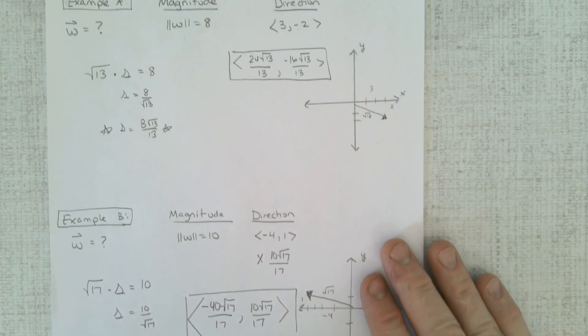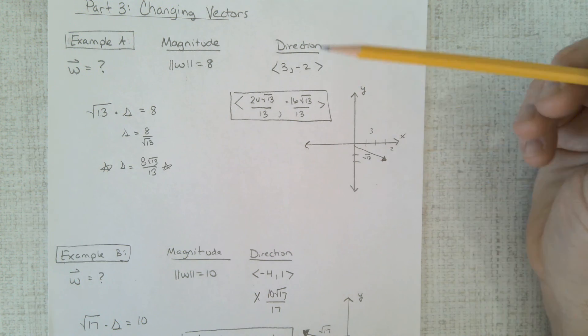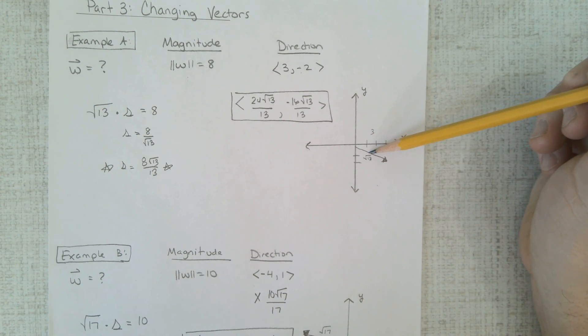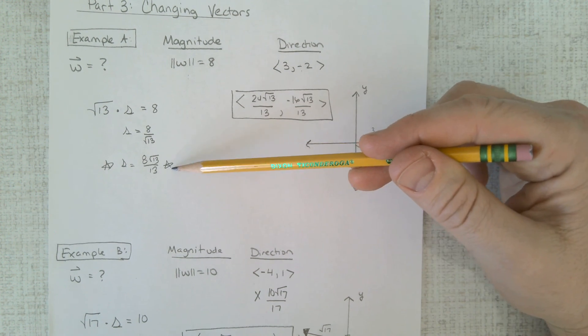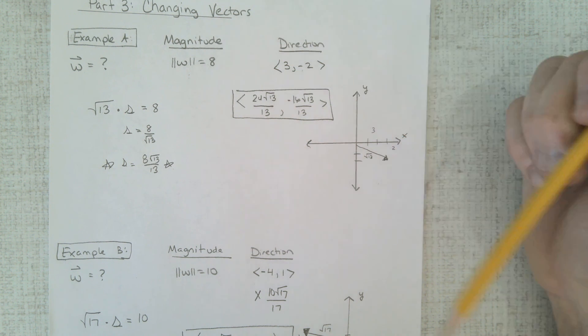Alright, again what we have done, we have taken vectors that were short, multiplied them by a scalar, so we get the right magnitude that we're looking for.